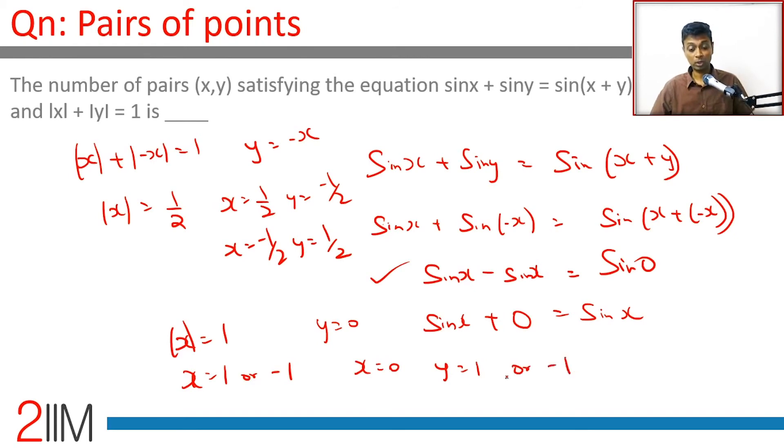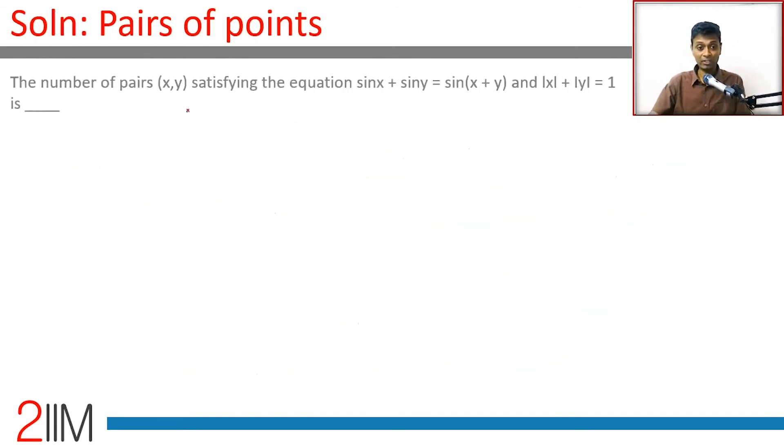The opposite will also work: x = 0 and y = 1 or -1. So we have (0, 1), (0, -1), (1, 0), and (-1, 0).